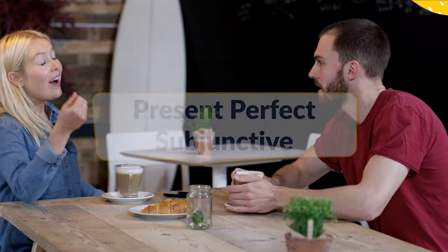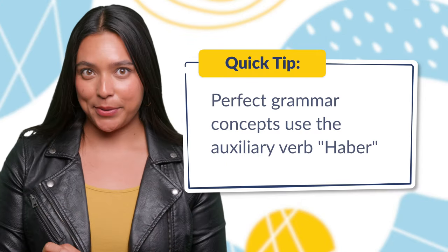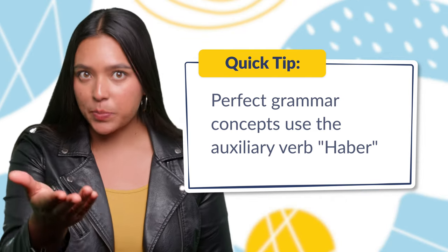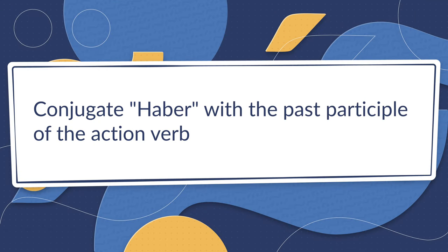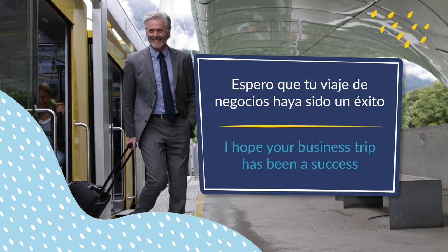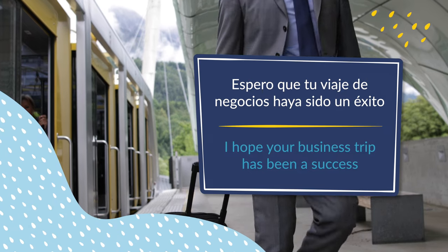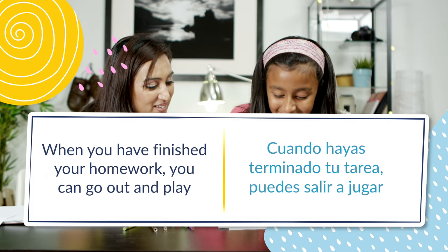Finally, we're going to look at present perfect subjunctive. We use present perfect when we talk about something that has started and affects the present or future. Here's a quick tip: any Spanish grammar concept that includes the word 'perfect,' such as present perfect subjunctive, will require a similar conjugation structure using the auxiliary verb haber. In this case, the structure requires you to conjugate haber in present subjunctive, plus the past participle of the action verb. For example: 'Espero que tu viaje de negocios haya sido un éxito' — 'I hope your business trip has been a success.' And: 'Cuando hayas terminado tu tarea, puedes salir a jugar' — 'When you have finished your homework, you can go out and play.' We use present perfect when we talk about something that has started and affects the present or future.